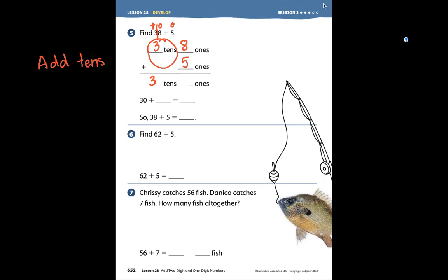And then we have 8 ones. 1, 2, 3, 4, 5, 6, 7, 8. And we're adding 5 more ones. 1, 2, 3, 4, 5 ones.